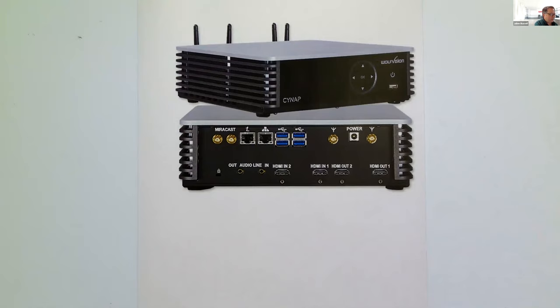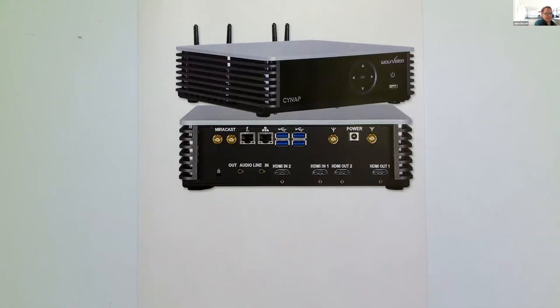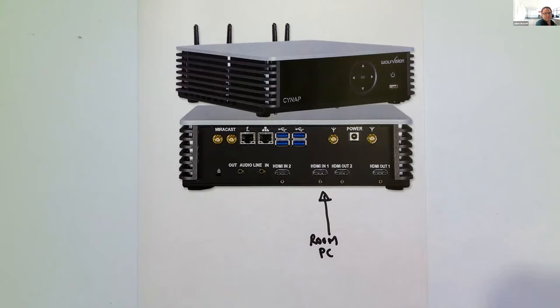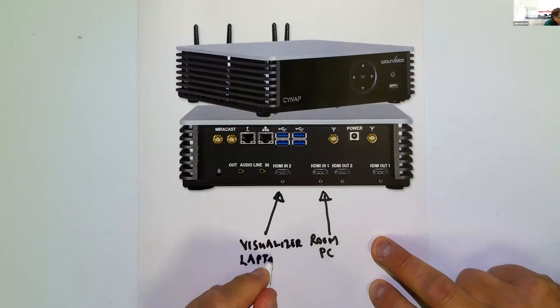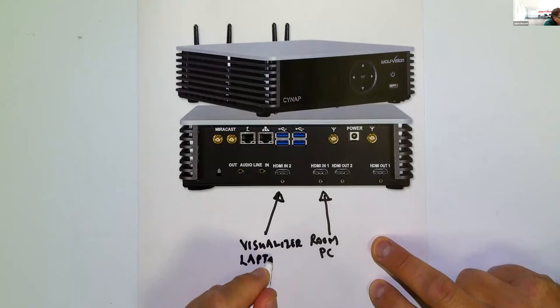As you can see at the back, there are two HDMI inputs. Starting with HDMI Input 1 — in the university sector, you'll almost always have an in-room PC, so HDMI In 1 would typically be for the room PC. HDMI In 2 could be used to connect a WolfVision visualizer, or alternatively to hardwire a laptop directly into the Cynap.